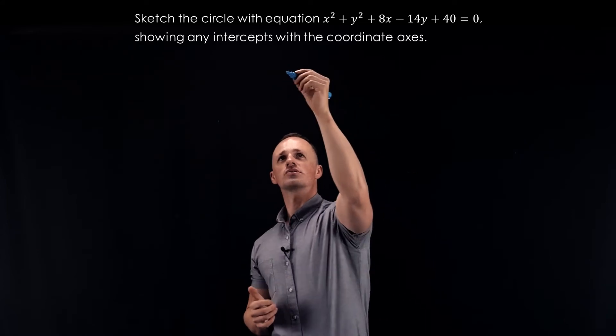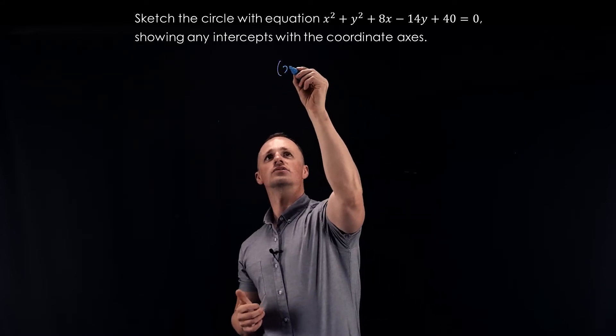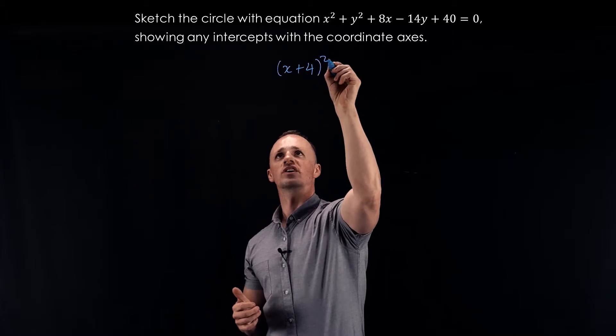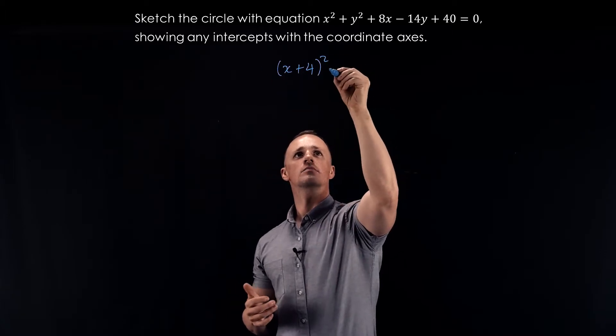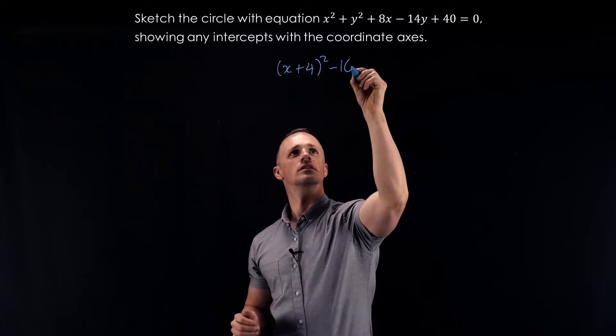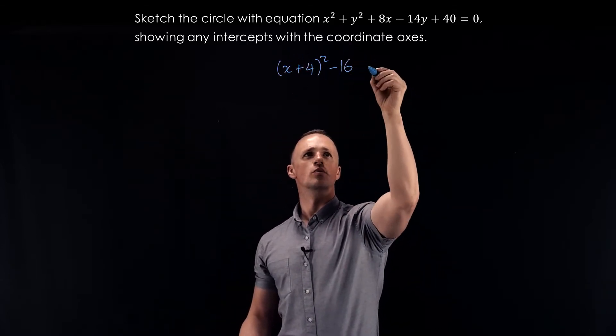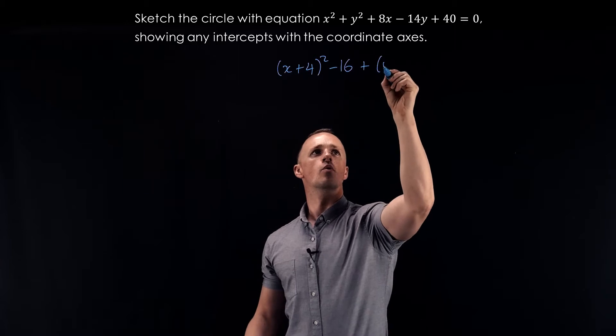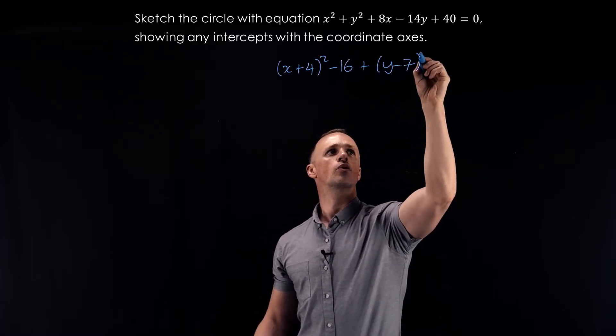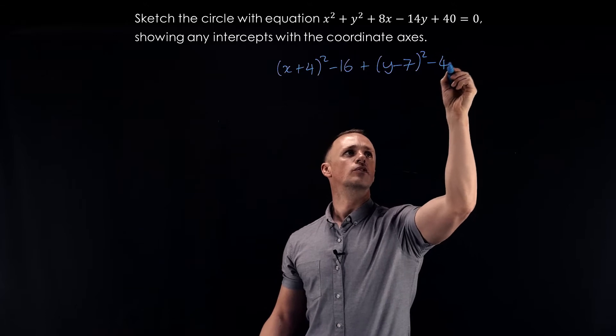So using the x parts, I'm going to have x plus 4 all squared. That will give me the x squared plus 8x, but then I need to subtract 16 from that. I've got y squared minus 14y. That's just going to become y minus 7 all squared, subtract 49.